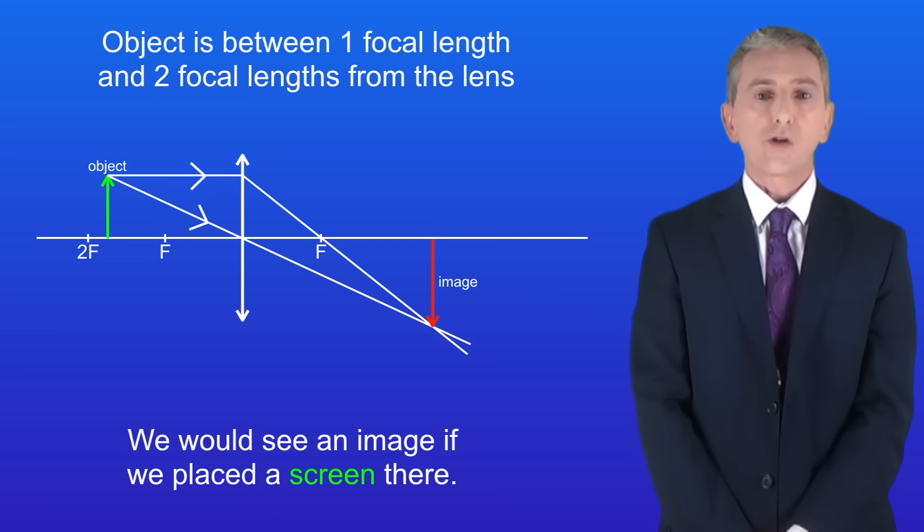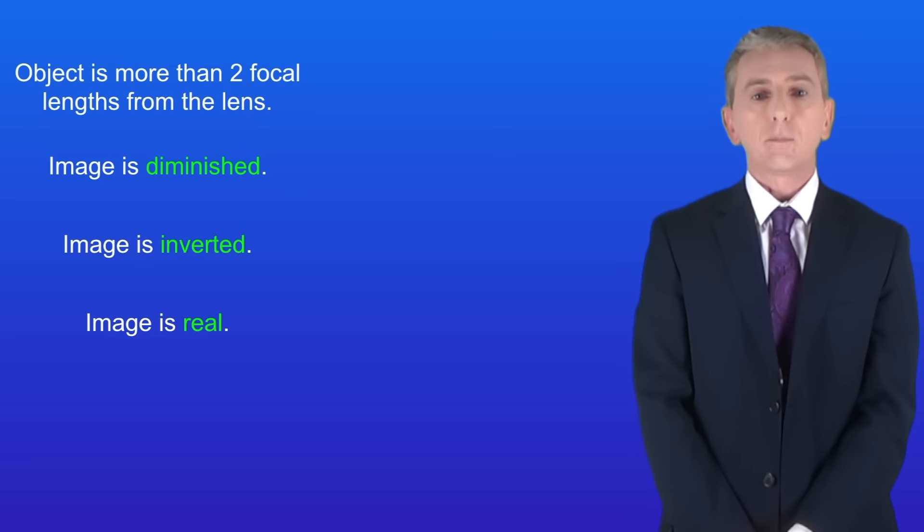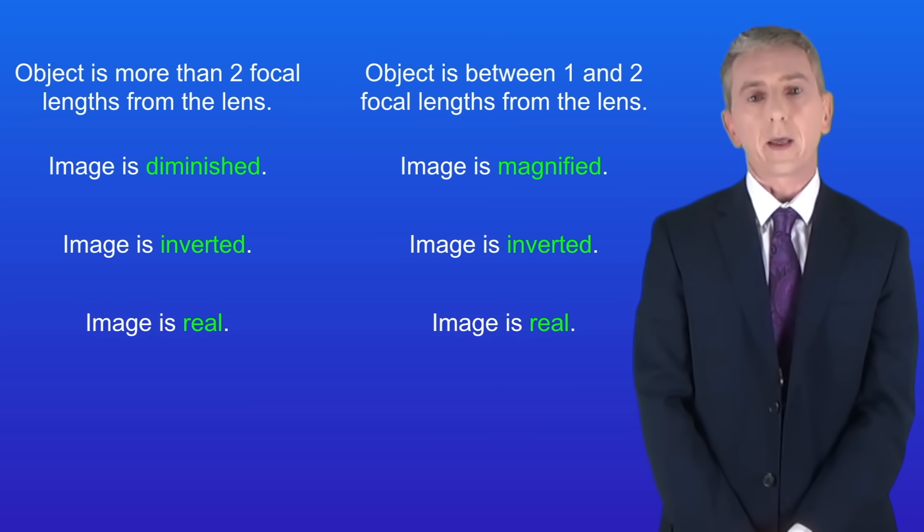So as you can see the properties of the image depend on the distance between the object and the lens. If the object is more than two focal lengths from the lens then the image is diminished, inverted and real. However if the object is between one and two focal lengths from the lens then the image is magnified, inverted and real.